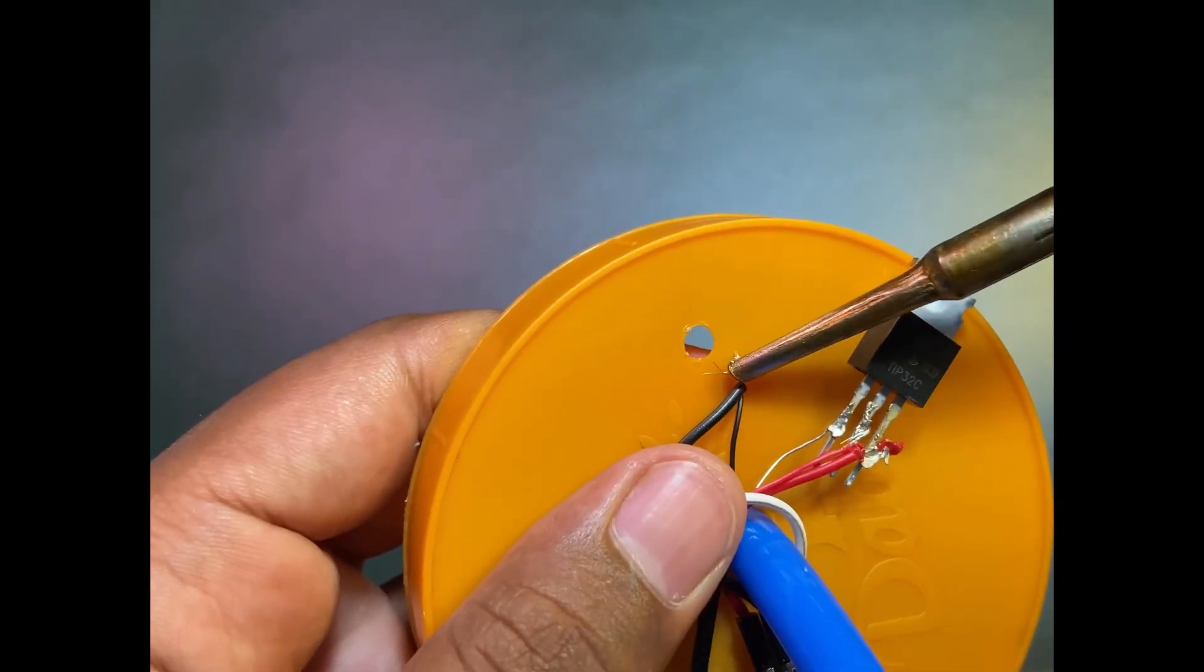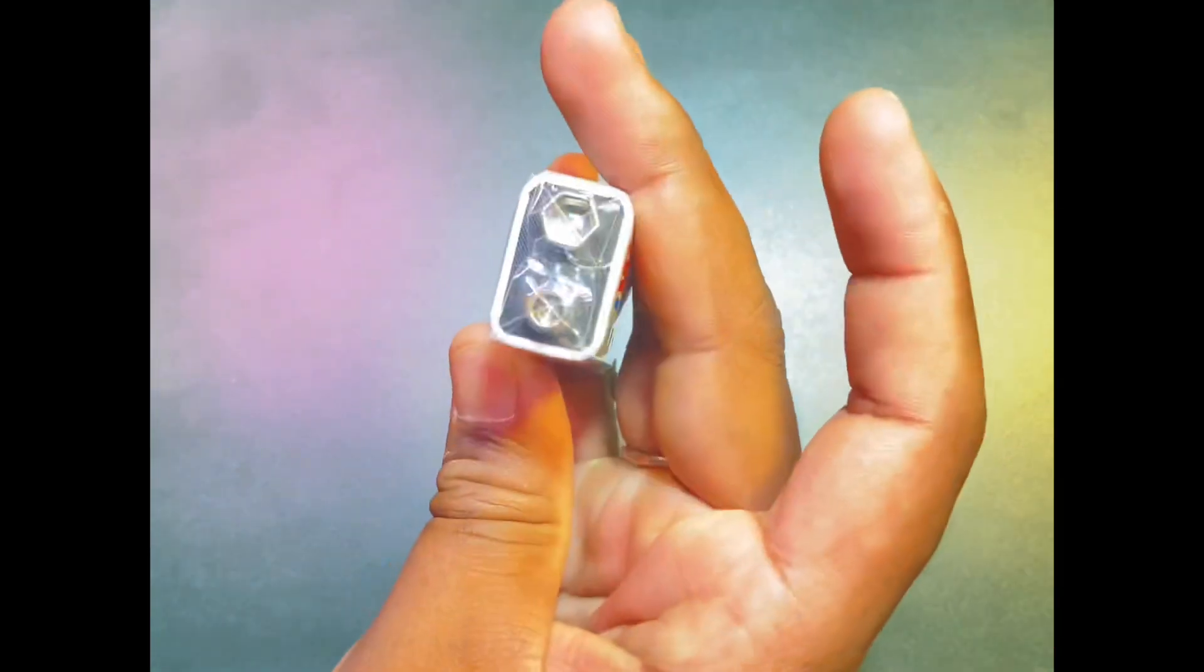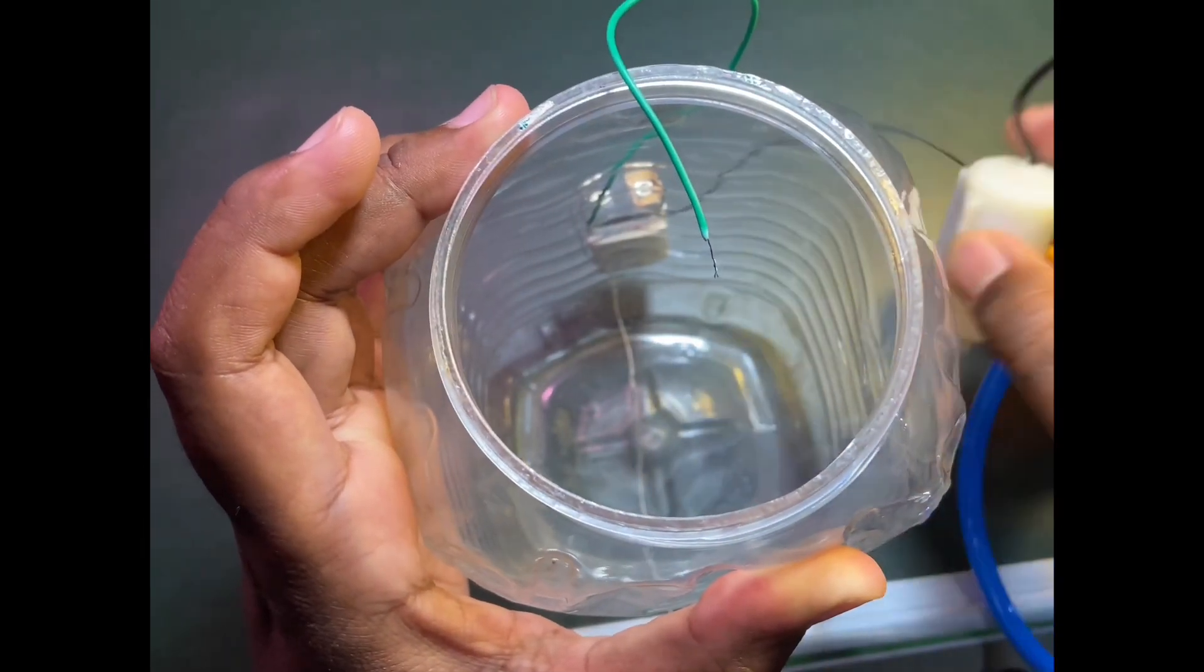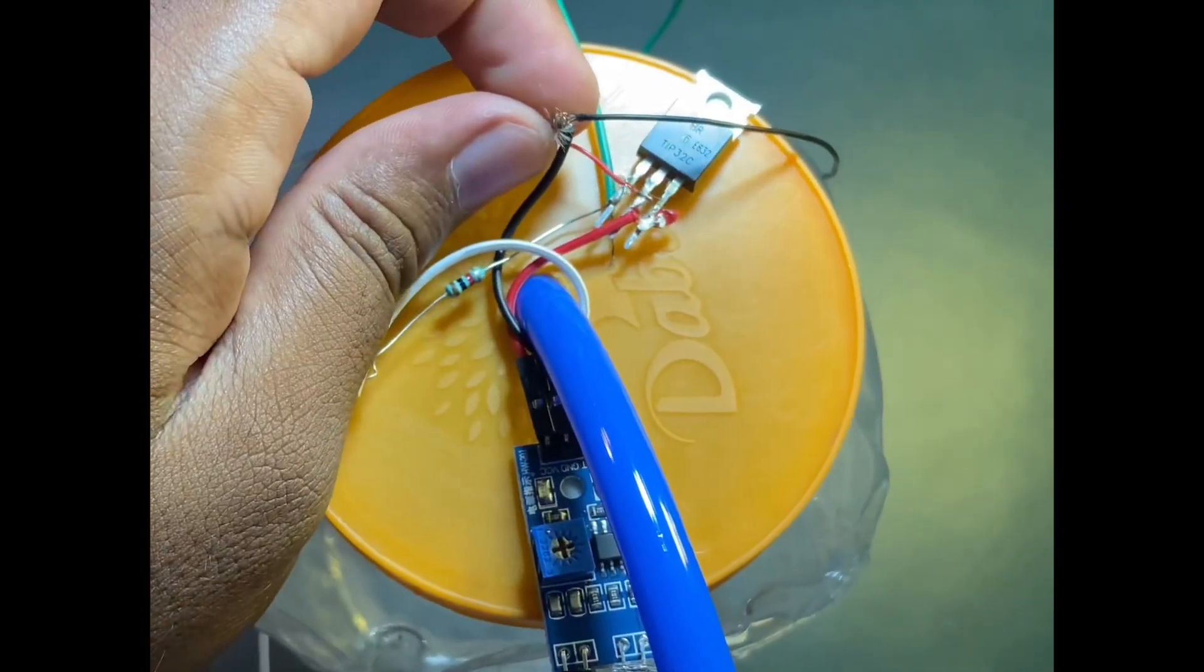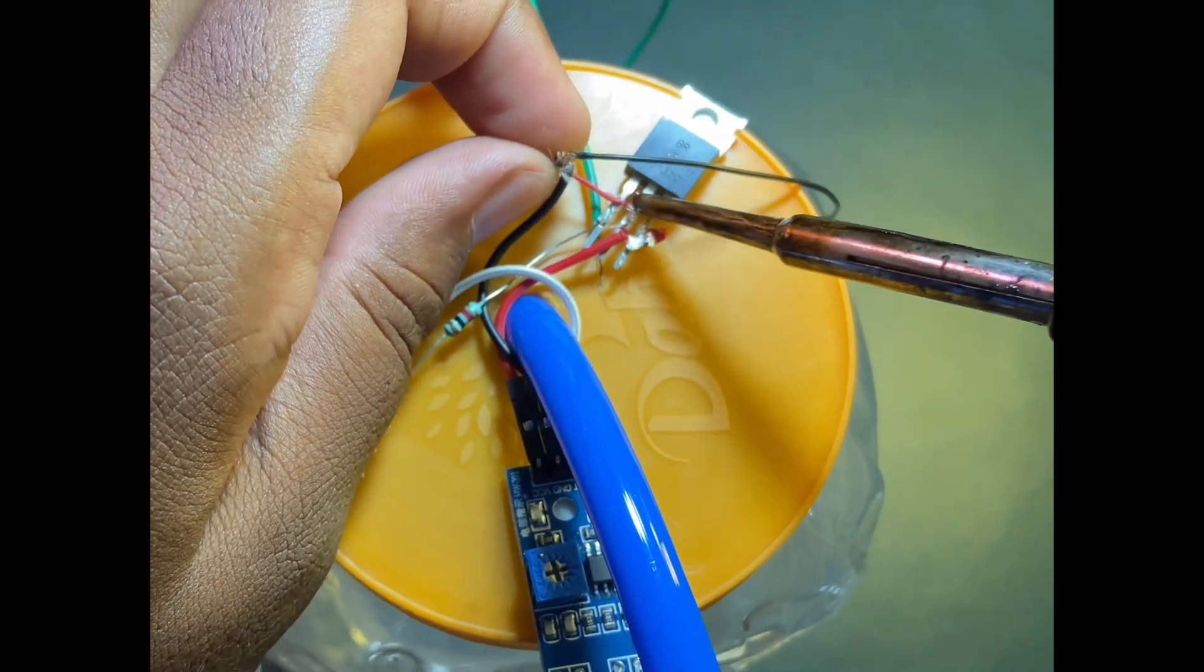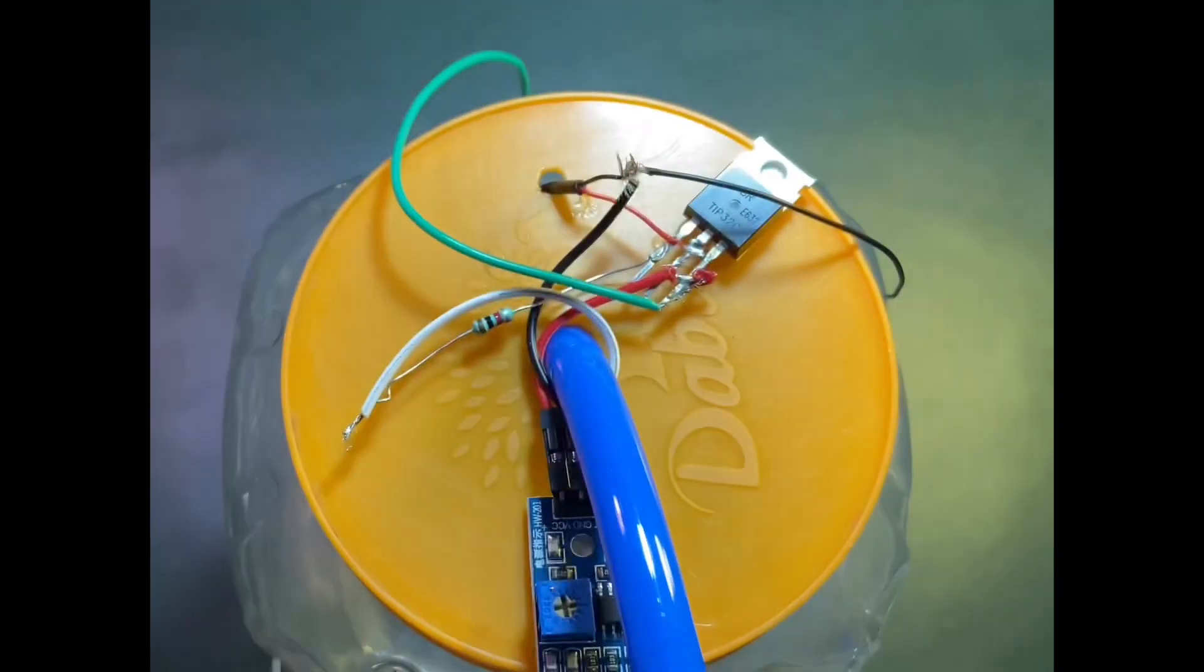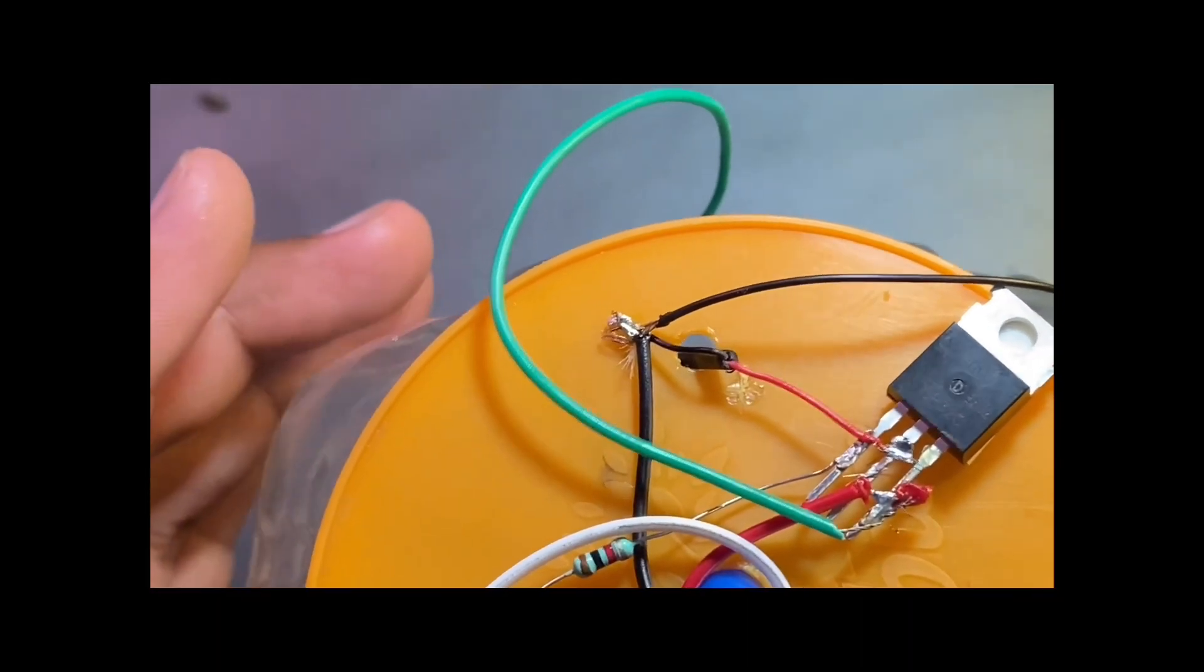The negative wire of the pump is connected to the ground of the sensor. Here is the nine volt battery. The positive terminal of the battery is connected to the emitter of the transistor, and the negative terminal is connected to the ground of the sensor.